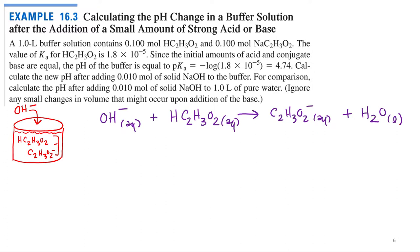Is this a balanced chemical equation? Yes — when you're just accepting and donating one proton in a neutralization reaction, it's always balanced if you write the products correctly. So it's a one-to-one ratio straight across. For every one mole of hydroxide added, acetic acid goes down by that amount and acetate goes up by that amount. In this problem, we added 0.01 moles of sodium hydroxide.